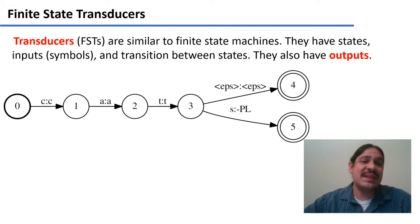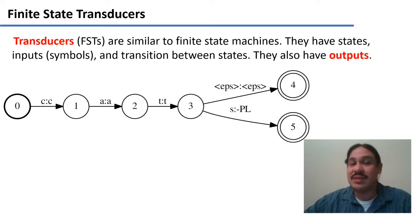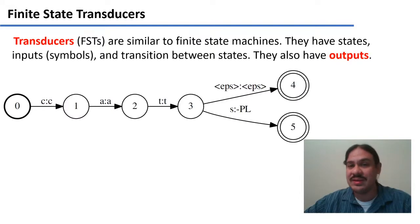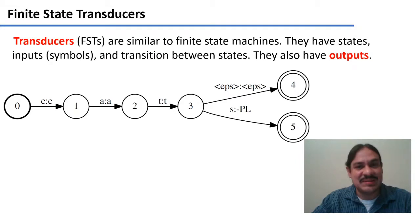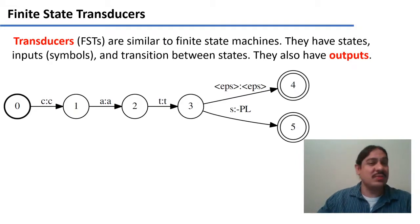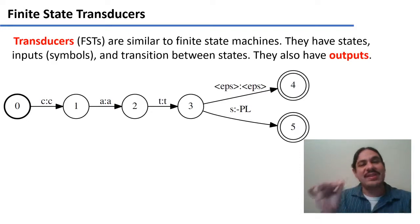This transducer has inputs. It has the input symbol C in the transition from 0 to 1, the input symbol A in the transition from 1 to 2, the input symbol T in the transition from 2 to 3, and in the transition from 3 to 5, it has the input symbol S. So if it was just a normal finite state machine, it would read the string "cats" as it goes from 0 to 5.